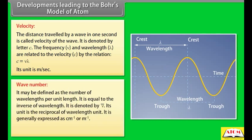Wave number: It may be defined as the number of wavelengths per unit length. It is equal to the inverse of wavelength and is denoted by nu-bar. Its unit is the reciprocal of the wavelength unit, generally expressed as 1/cm or 1/m. Nu-bar = 1/lambda.